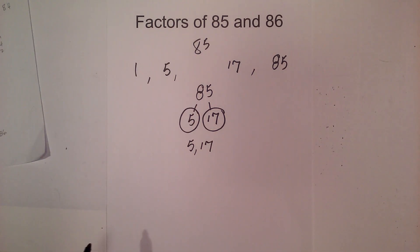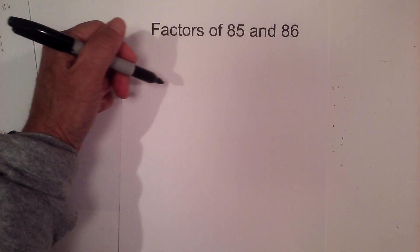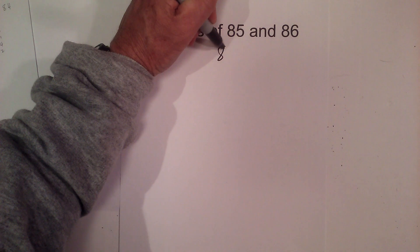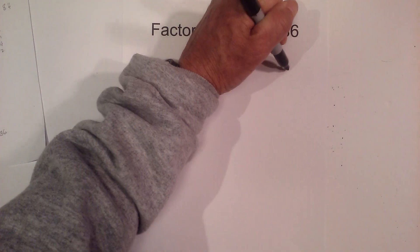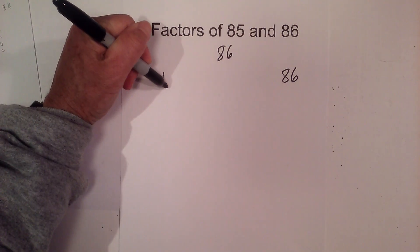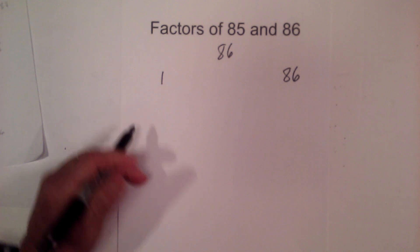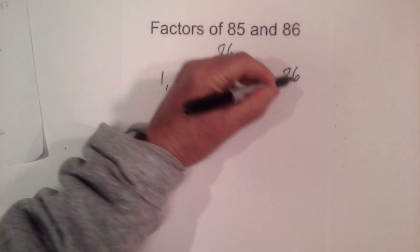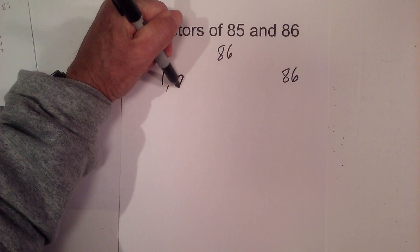Now, let's look at 86. So let's start with 86. I'm going to start with 1 times 86, and then I know that 2 goes into 86 because it ends in an even number.